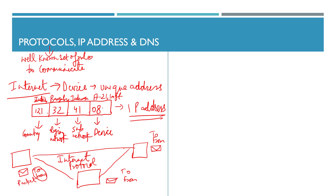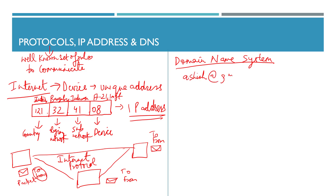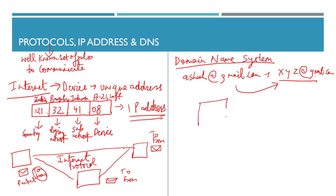Normally we wouldn't know a device's IP address directly. For example, if I send an email to ashish@gmail.com, there is something known as the Domain Name System (DNS). DNS servers hold this information — when I type a name, my computer asks a domain server, and the domain server returns the exact IP address of the device so the information can be routed correctly.